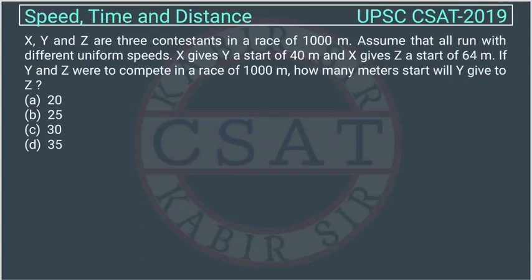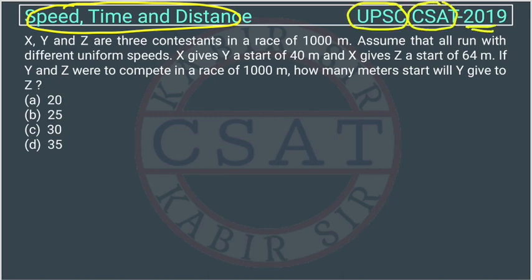This is a question of speed, time and distance asked by UPSC in the CSAT paper of 2019. X, Y and Z are three contestants in a race of 1000 meters. Assume that all run with different uniform speeds.